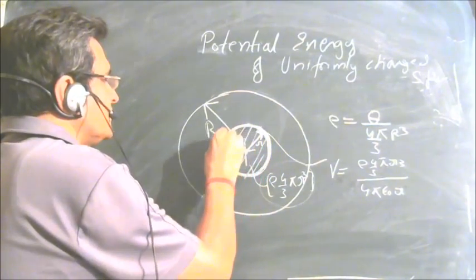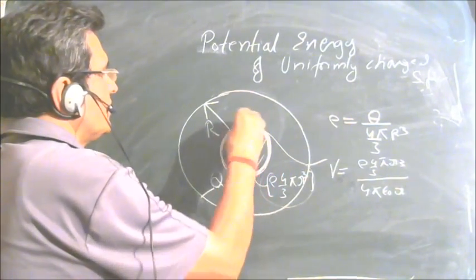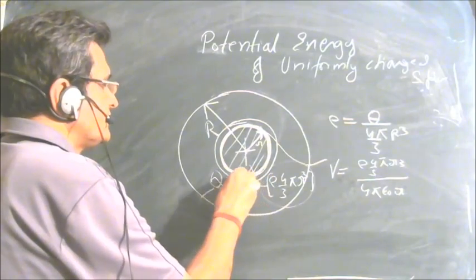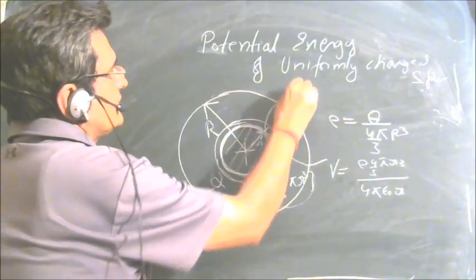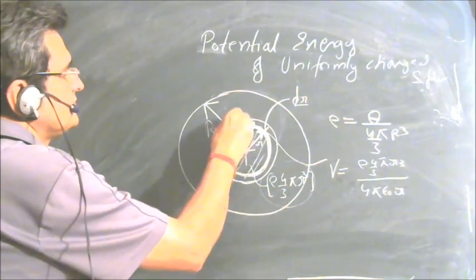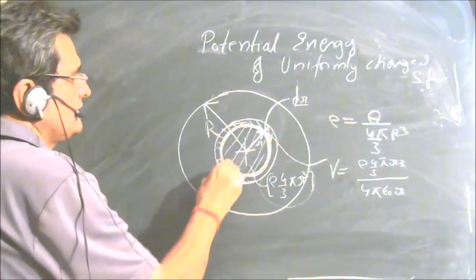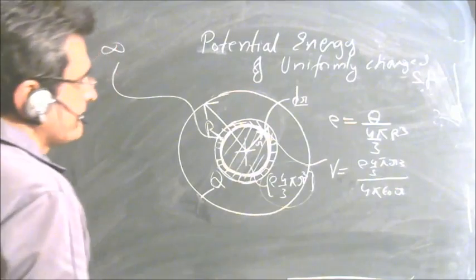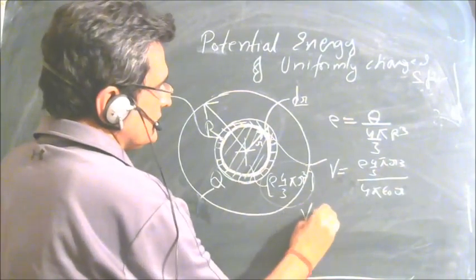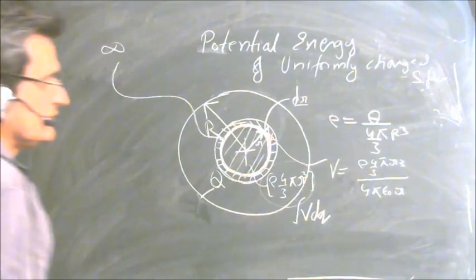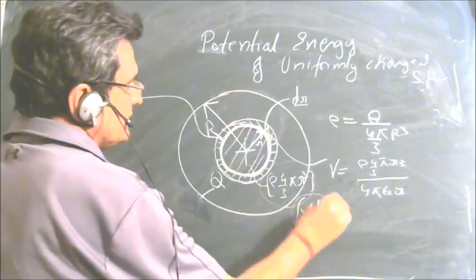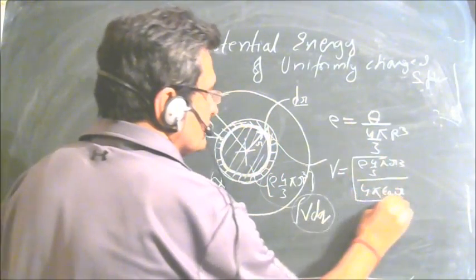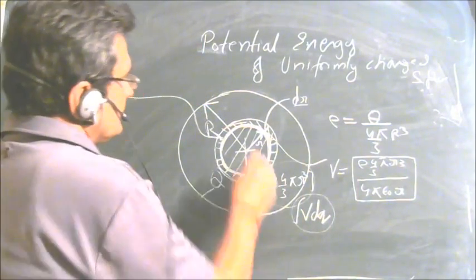Now, suppose when we are assembling the charge, the radius of this sphere increases from r to r + dr. Let dr be a small thickness — shown relatively bigger just to understand, but it is a very small thickness. We are bringing charge from infinity and assembling it. This additional charge dQ is brought from infinity, and the work done in doing that is V · dQ, which is the potential energy.